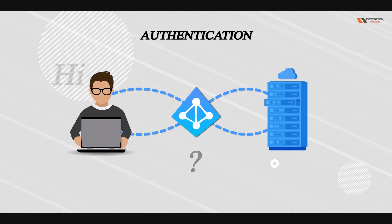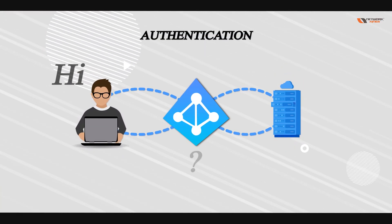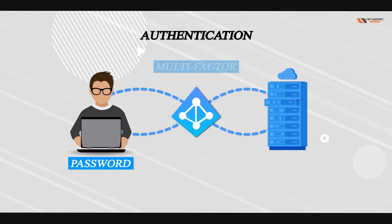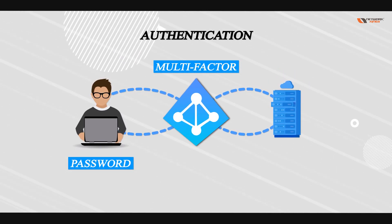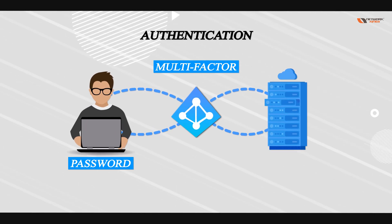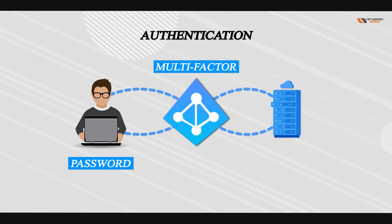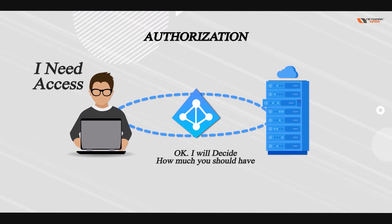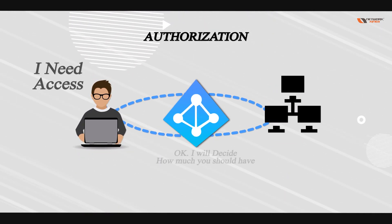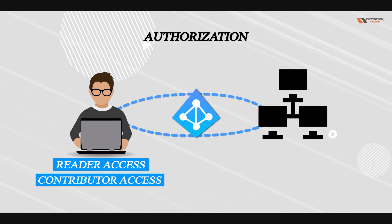Authentication is verifying who the user is — through passwords or multi-factor authentication, you have to identify yourself as who you say you are. Authorization is about how much access you have to a resource. You could have reader access or contributor access to a resource — this could be any resource.